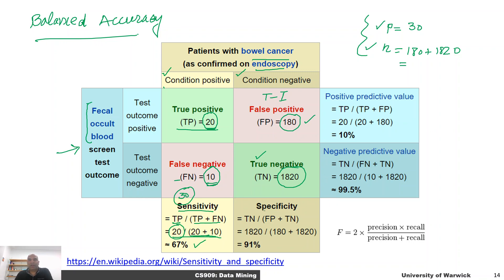Similarly, specificity is the number of true negatives divided by the total number of negatives, which equals false positives plus true negatives — in this case 180 plus 1,820. Specificity means: if a test says a person does not have the condition, what are the chances they actually don't? If the specificity is 91%, then out of all the people who don't have the condition, the test correctly identifies them 91% of the time.